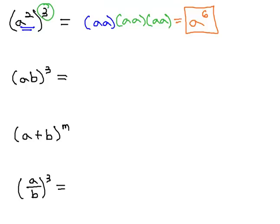We might notice a quicker way to do this problem would have been to take a and then multiply those exponents together, because we've got two of them there three times to get our answer much quicker.